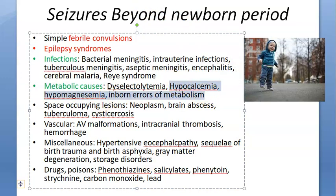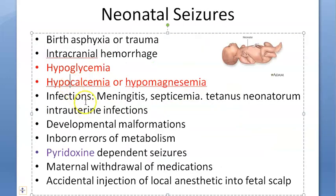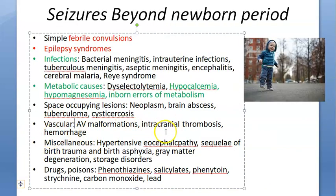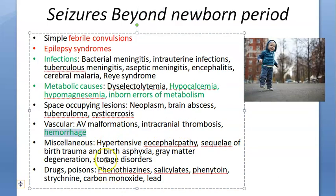Inborn errors of metabolism continue to be relevant beyond the neonatal period. Space-occupying lesions like neoplasms, vascular causes such as AV malformations, intracranial thrombosis, and hemorrhage are added. Birth trauma and birth asphyxia remain the same.